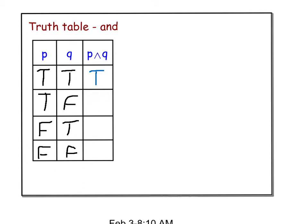In the third row, P is false, Q is true. Because they're not both true, P AND Q, the conjunction, is false.